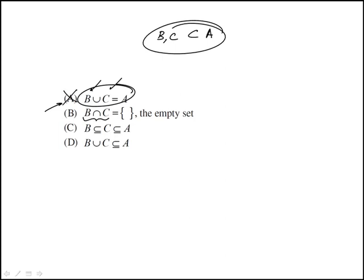B intersection C is the empty set. That would only be if they were identical. But they could have elements that they don't share, which in that case wouldn't be empty.